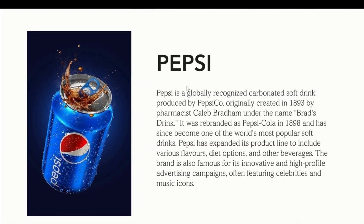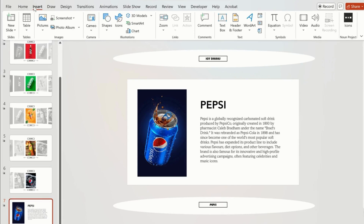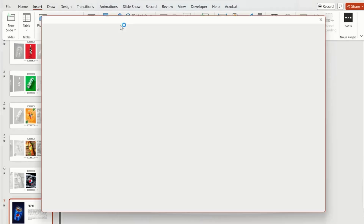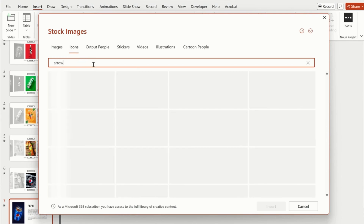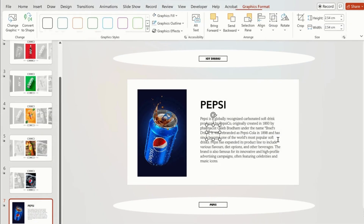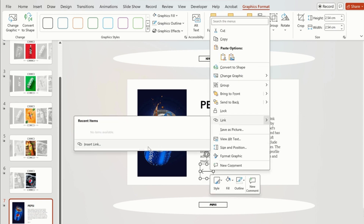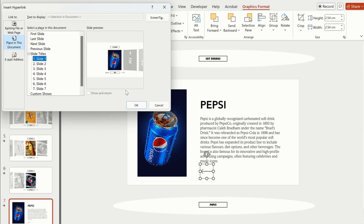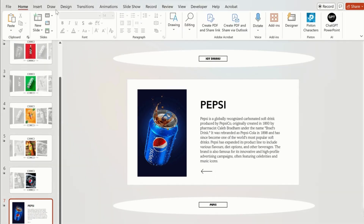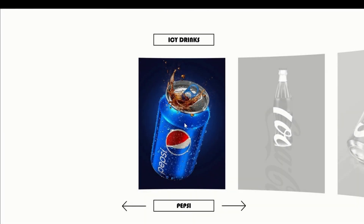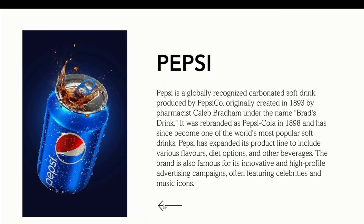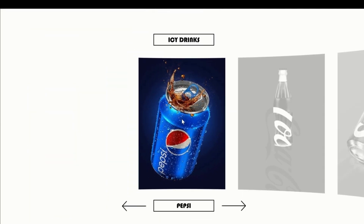As you can see, we cannot move back to the Pepsi image from here. To do this, we have to add a link to our description slide. Click on the Icon tab and insert a left arrow. Now click on the arrow and insert a link — select Slide 1 as the link. Now click on Slide View to see how it looks. When we click on the image, it takes us to the Pepsi description, and by clicking on the arrow it takes us back to the Pepsi carousel.